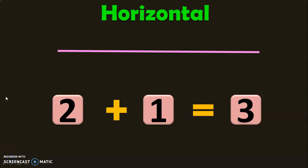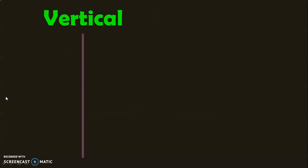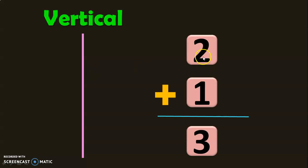Next, let us understand what is vertical addition. Vertical means a line in the standing position. In this type of addition, the numbers are written one below the other, the plus symbol is put on the left side, and the answer is written below. In vertical type of addition, the numbers to be added are written one below the other, the plus symbol is written on the left side, and the answer is written at the bottom.